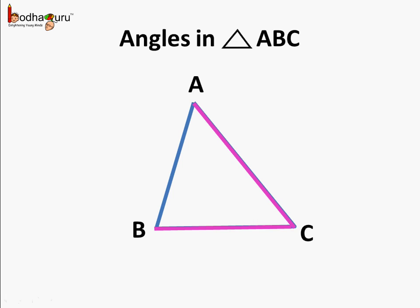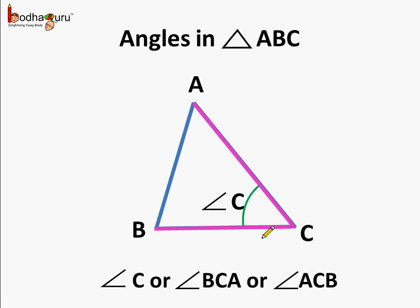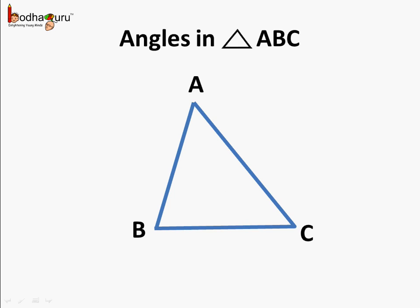Now let us see another angle. This is line segment AC and line segment BC, and the angle made at the vertex C is called angle C. We can call angle C by other names too, like angle BCA or angle ACB. If you see, C is written in the center in both cases — BCA or ACB — both have C in the middle, and it represents angle C only.